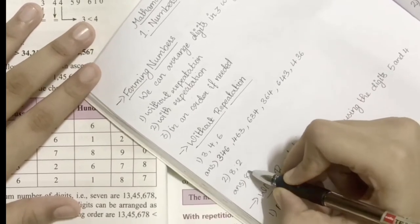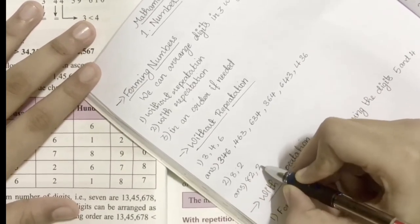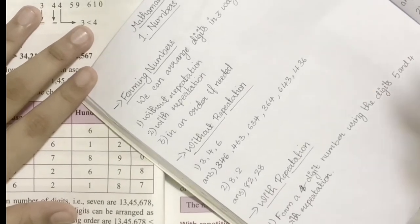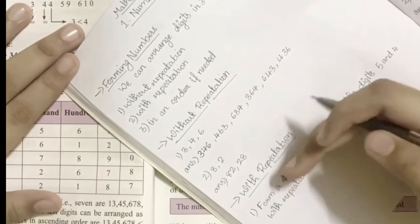Our second example is 8 and 2, so we can form it as 82 or 28 - only two numbers. And the next one is repetition. Let's read the question.